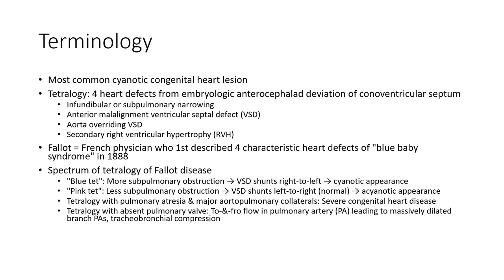Tetralogy with pulmonary atresia and major aortopulmonary collaterals represents severe congenital heart disease. Tetralogy with absent pulmonary valve causes abnormal flow in the pulmonary artery, leading to massively dilated branch pulmonary arteries causing tracheobronchial compression.